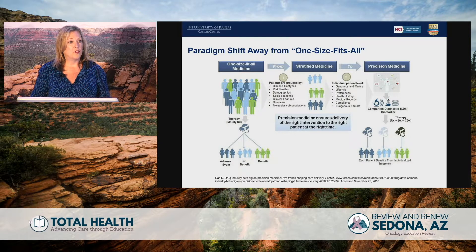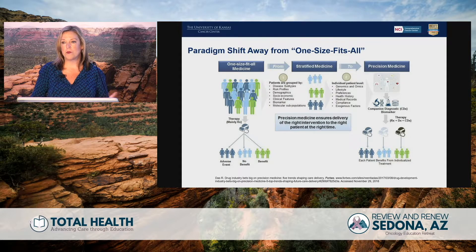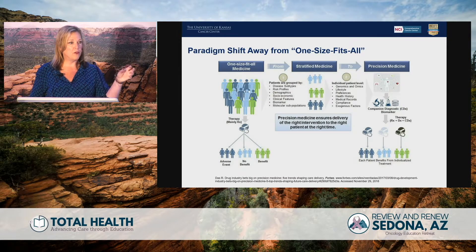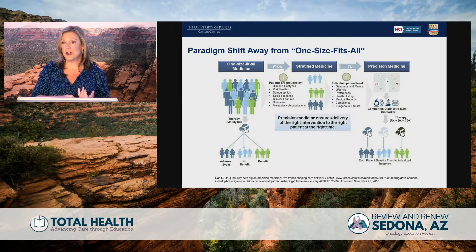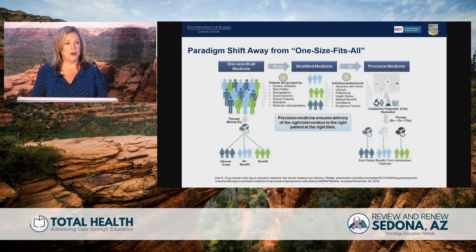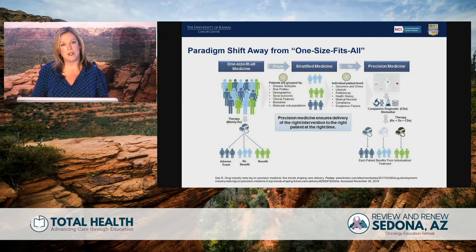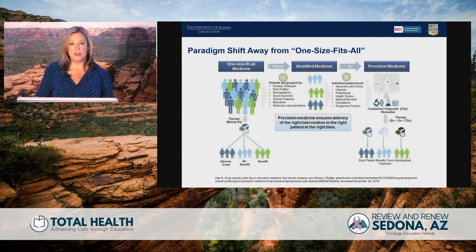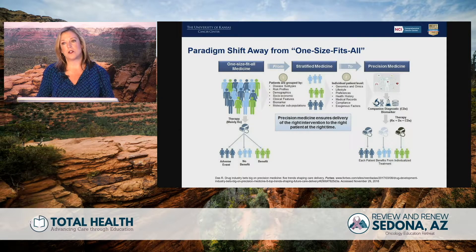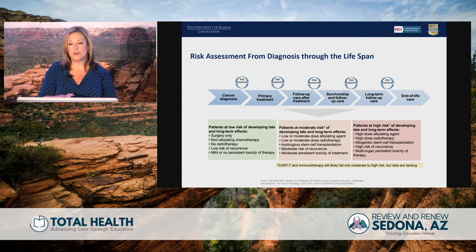We need to shift away from one size fits all. We don't do this with treatment — we are very biomarker driven and very informed as we develop a treatment plan. We need to have the same lens as we think about survivorship care. Every survivor isn't the same, and if you do one size fits all, patients will not necessarily engage because they have a whole spectrum of capabilities and engagement. It's also not always necessary for the level of risk that survivor has. So if we're doing one size fits all, it's economically distressing, it doesn't work, and it's not necessary — we have to think about it from a risk stratification lens.